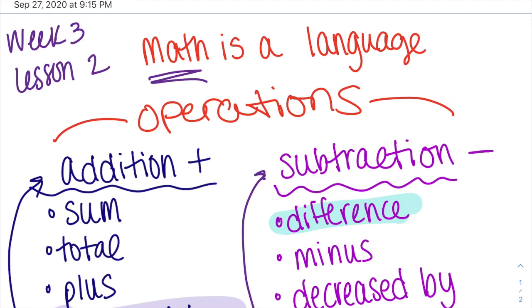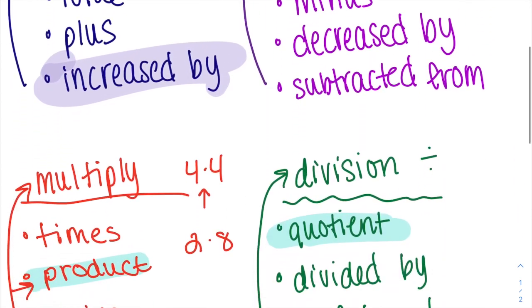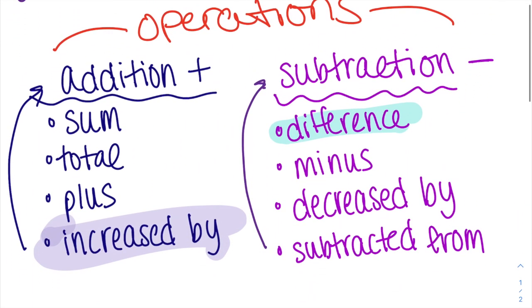This is week three, lesson three, very similar to lesson two, except we're adding in a new word here. And that new word has to talk about the equals sign. So far we've talked about words for addition, subtraction, multiplication, and division.